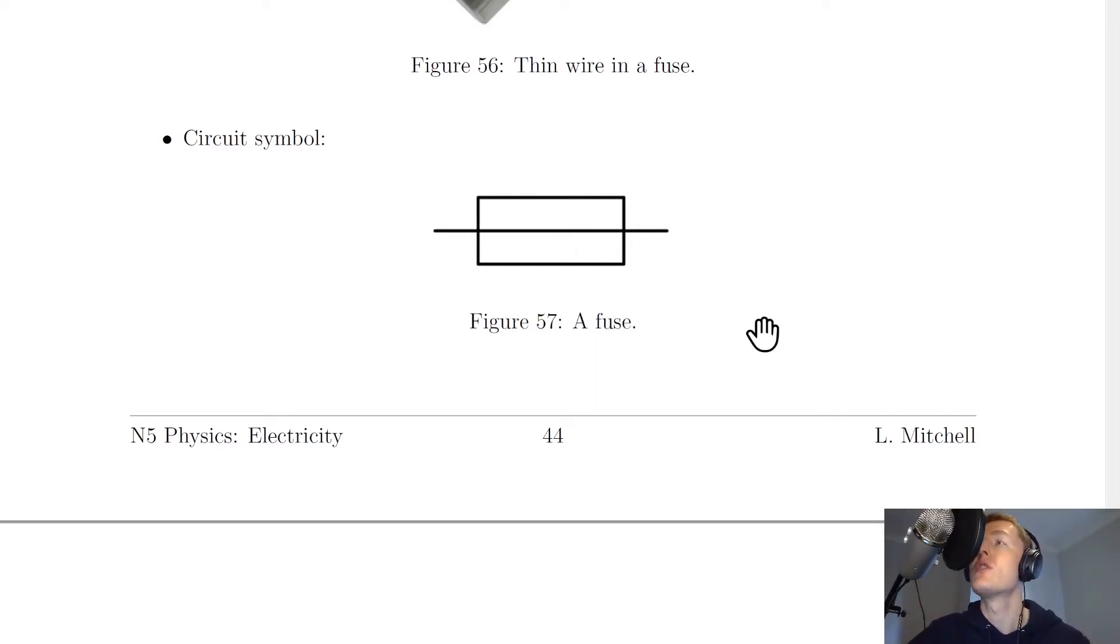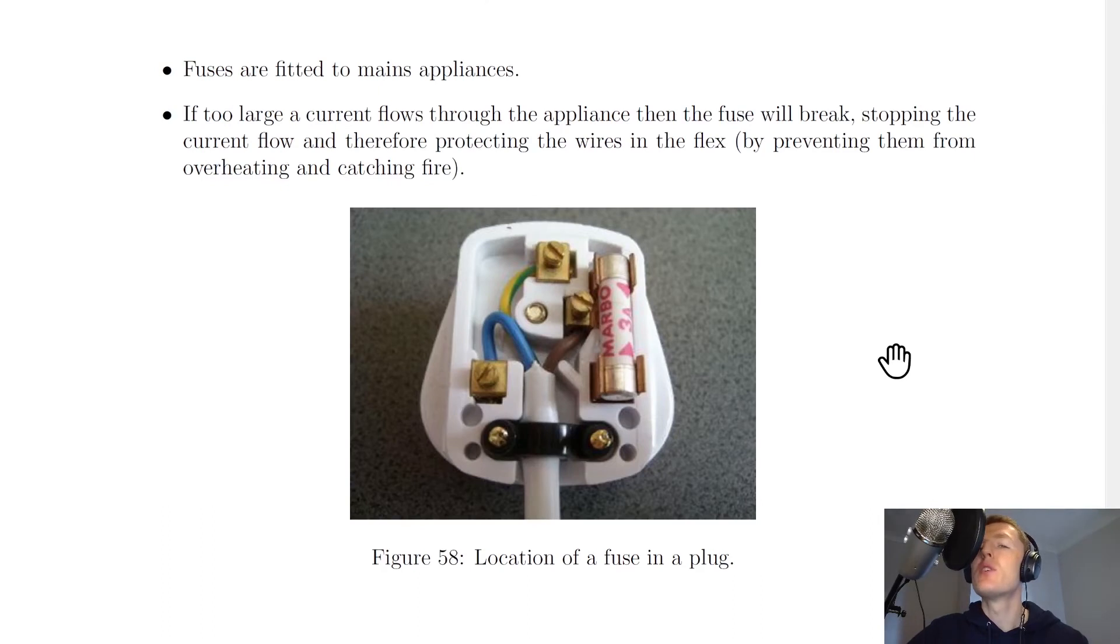So how do fuses work and why do we use them? Well, fuses are fitted to mains appliances. If we look at this plug here, you'll see it's got three types of wires and a fuse, and then we've got this outer flex here which protects the three wires inside. Just for interest, the types of wires we have here: the green and yellow one is called the earth wire, the blue one is called the neutral wire, and the brown wire is called the live wire.